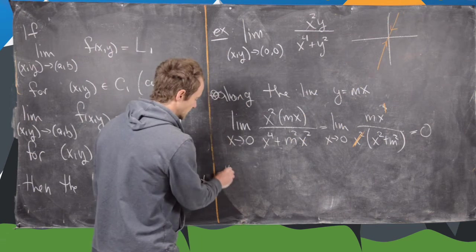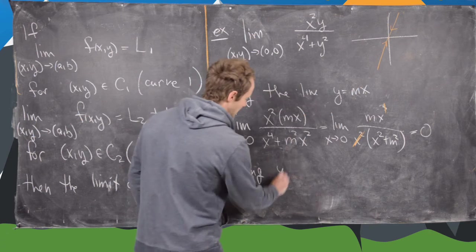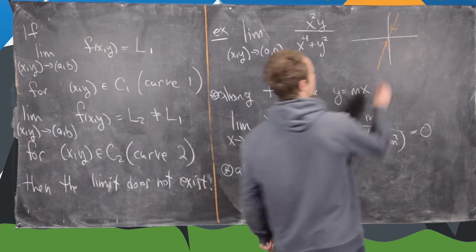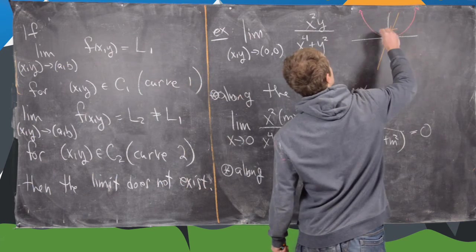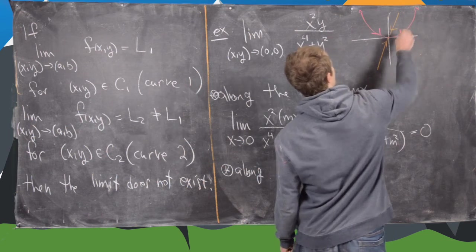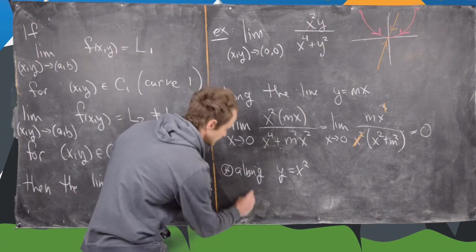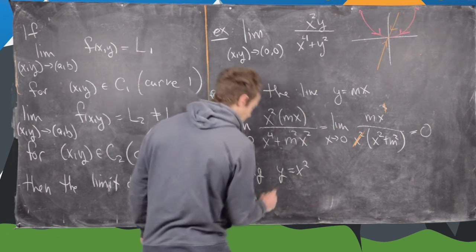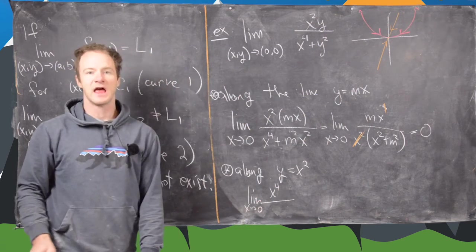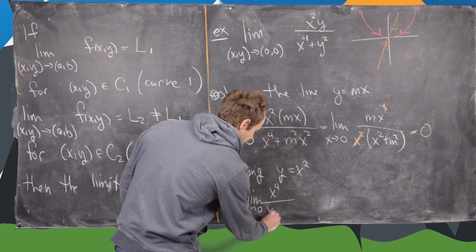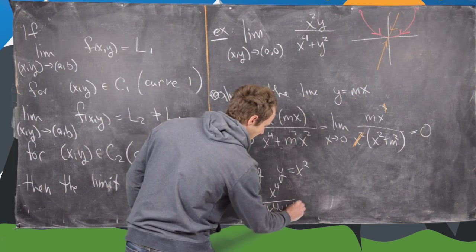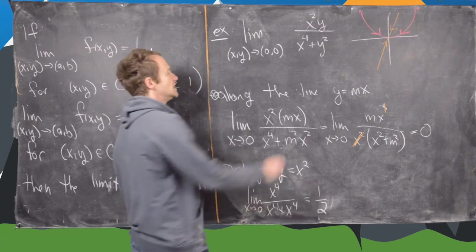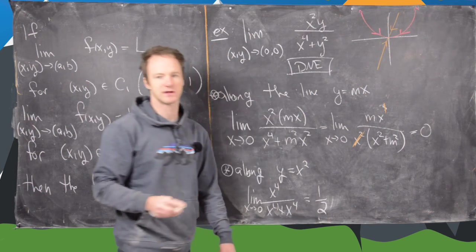The next one to look at would be along a parabola y equals x squared. So we have a parabola here, and we're taking a limit as we're approaching zero along that parabola. Our limit in that case is going to be the limit as x approaches zero of x to the fourth in the numerator. And then in the denominator, we have x to the fourth plus x squared squared, so that's again x to the fourth. So notice that limit is going to be one half. But now one half is not the same as zero, so we've just shown that this limit does not exist similarly to the other examples.